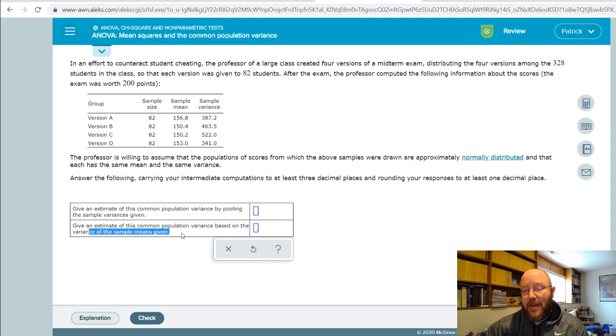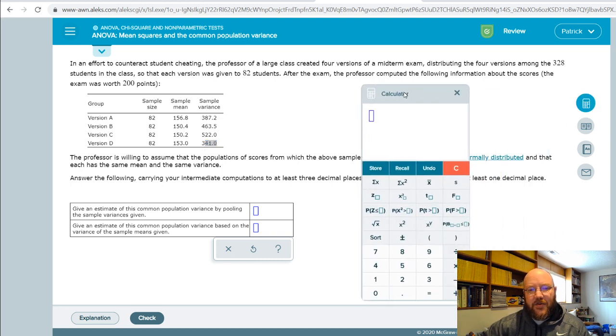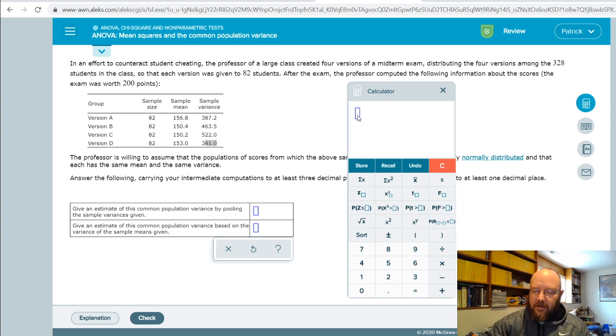Write that down because it'll help you with the next problem. The way that you calculate these is really easy. I always start with the one that says pooling the sample variance is given because that one's easier to do. When you pool the sample variances, all you're doing is taking the mean of these, which is your sample variance. So that's 387.2 plus 463.5 plus 522.0 plus 341.0. I'm just going to add all these together and then divide by how many there are, four, so I'm just taking the mean of these.